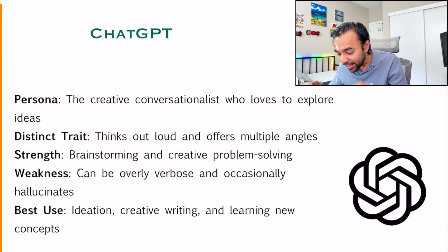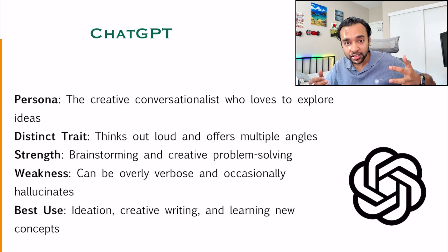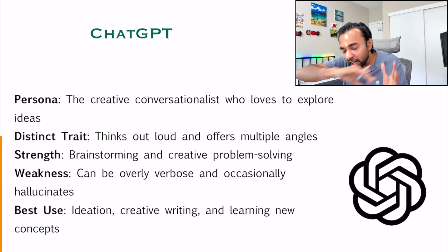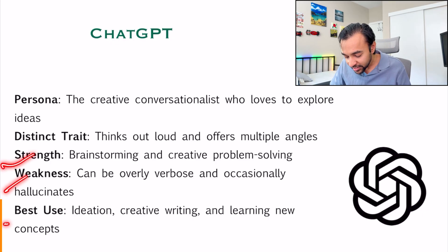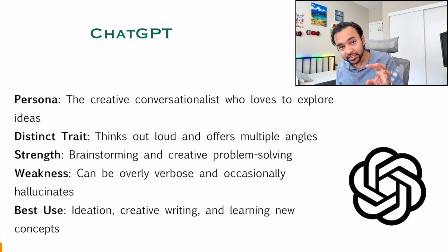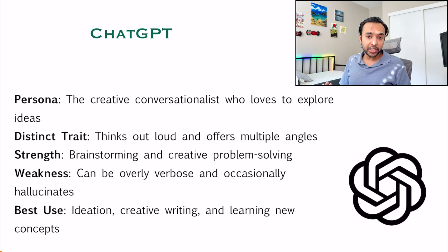We will look at some of the very popular models. First, you all know about ChatGPT — the most popular model. It is very creative and you can explore almost any idea with it. It thinks out loud and will often show you multiple angles. It is great for creative problem-solving or brainstorming. However, it can be overly verbose and it hallucinates — meaning it comes up with information of its own that doesn't even exist. So you have to check the information before implementing whatever ChatGPT tells you.